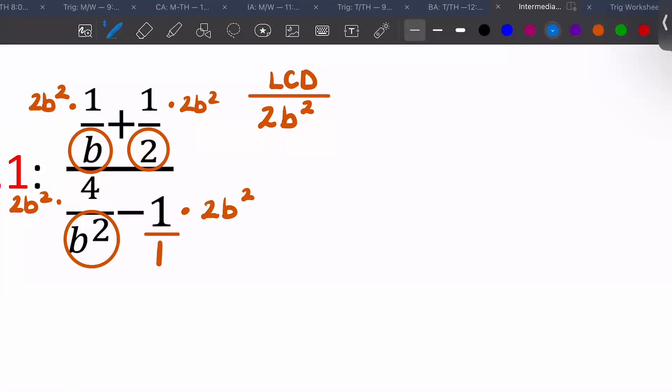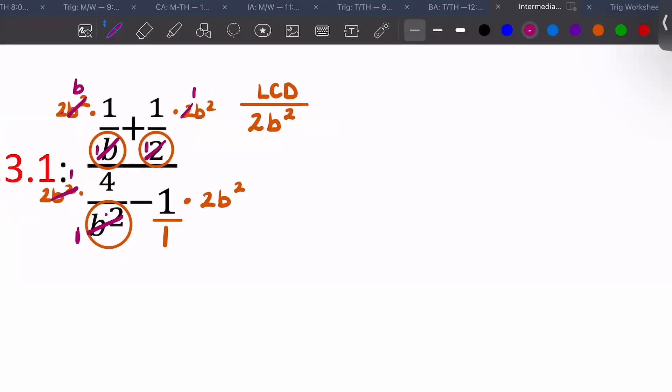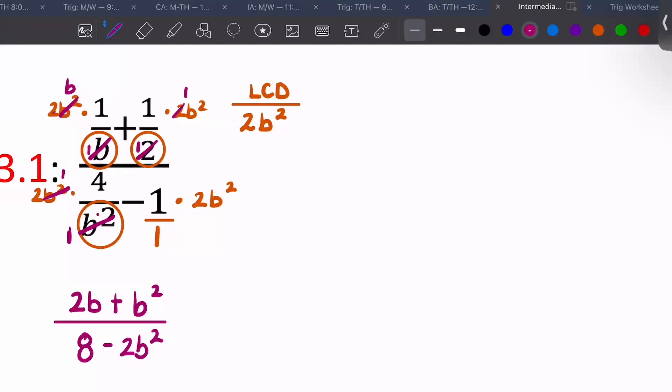We're going to cancel out now. So we have two b squared over b. So that leaves us with one b up top, and our two stays alone, our one stays alone. Our twos go away there. On the bottom, our b squareds go to just one. And then we didn't have anything on the bottom with our one. So let's see how we are left. So 2b times 1 is just 2b, plus 1 times b squared is b squared, over 2 times 4 is 8, minus 2b squared. Notice, you no longer have a complex fraction, you just have a fraction. That's going to happen every single time.